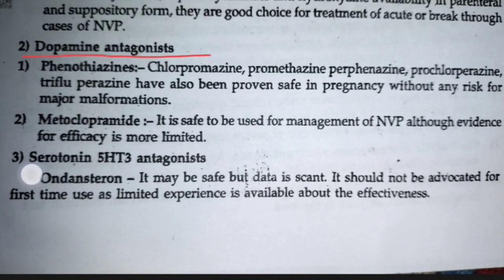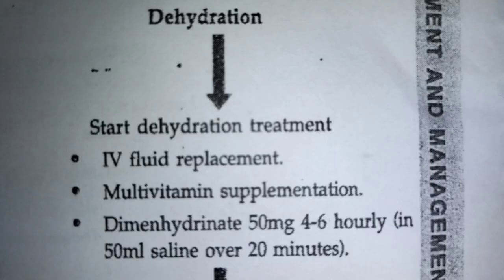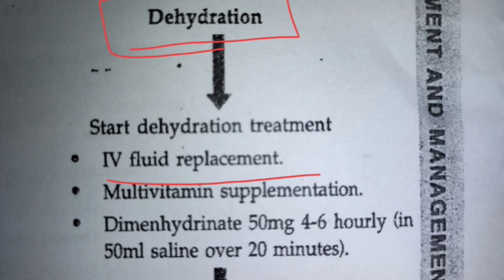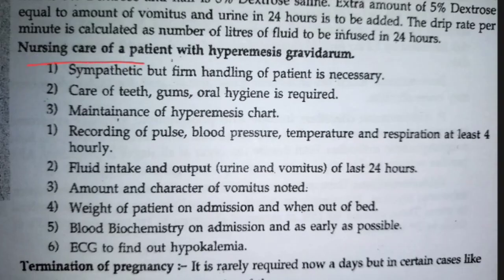Pharmacological methods: we generally use ondansetron to stop the vomiting sensation. Apart from this, phenothiazine and metoclopramide also help stop vomiting immediately. If diet pattern doesn't work, these medicines are provided. For dehydration, we start IV fluids and multivitamin tablets. If the patient is very dehydrated and not regaining, we provide dimenhydrinate 50 mg based on doctor's prescription.